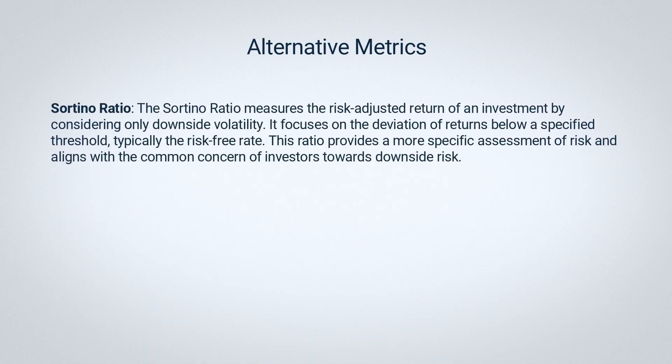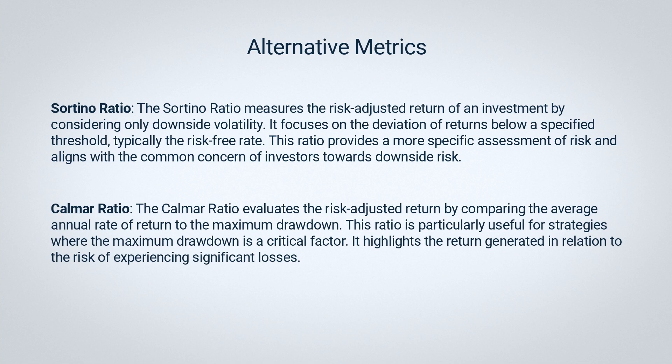Given these limitations, traders often turn to the Sortino ratio and Calmar ratio. The Sortino ratio measures risk-adjusted return by considering only downside volatility — deviations below a specified threshold, typically the risk-free rate — providing a more specific assessment aligned with investors' concern about downside risk. The Calmar ratio evaluates risk-adjusted return by comparing the average annual rate of return to the maximum drawdown, particularly useful for strategies where maximum drawdown is a critical factor. Together these metrics give traders a more comprehensive perspective on risk and return.